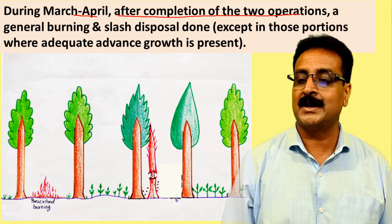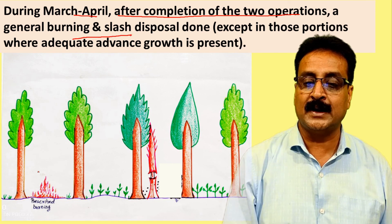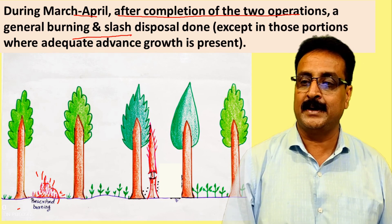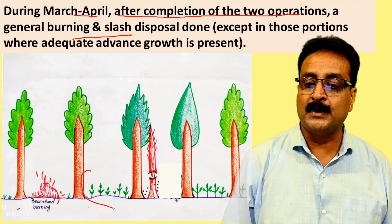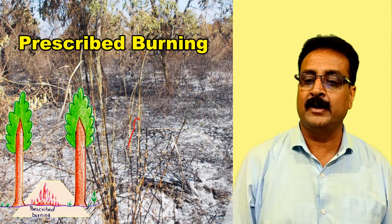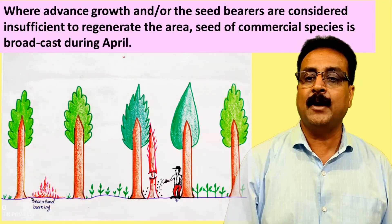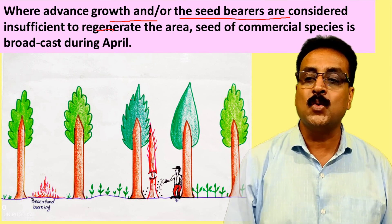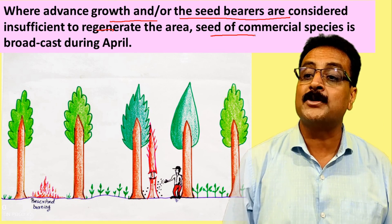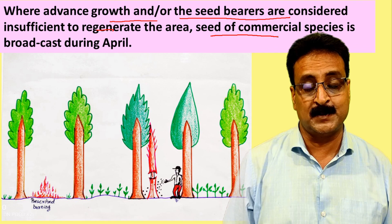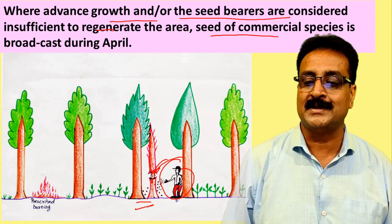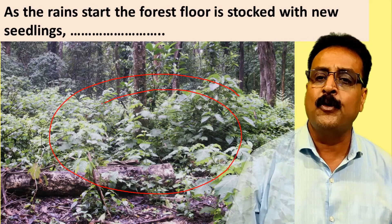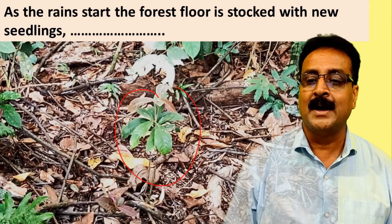During March and April, after completing the felling of non-commercial poles and girdling, a general burning of slash (prescribed burning) is carried out in areas where there is no regeneration. Harvested branches and twigs are burned. Care is taken not to burn areas with advanced growth. Where advanced growth or seed bearers are considered insufficient, seeds of desired commercial species are broadcast-sown before the rains arrive.